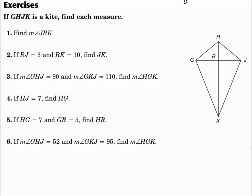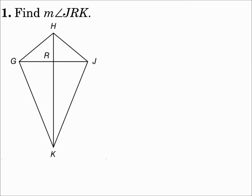If GHJK is a kite, find each measure. Find the measure of angle JRK. Angle JRK occurs where the diagonals intersect. One of the properties of a kite is that the diagonals are perpendicular, so that's a right angle. The measure of angle JRK equals 90.